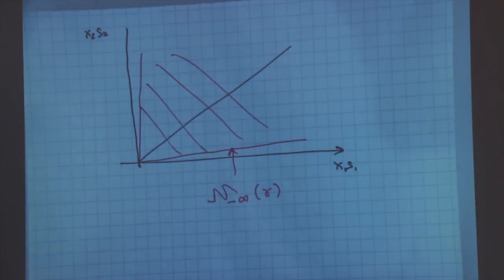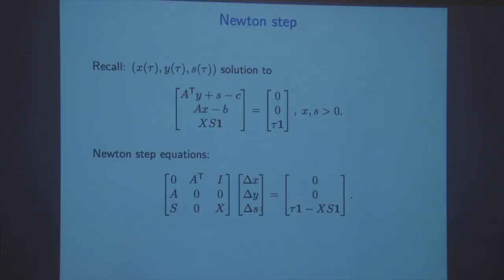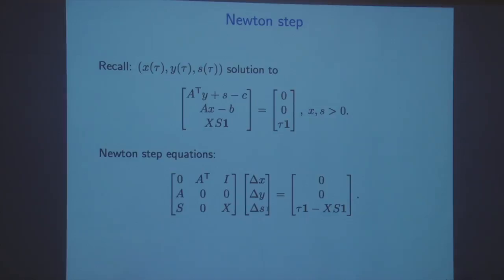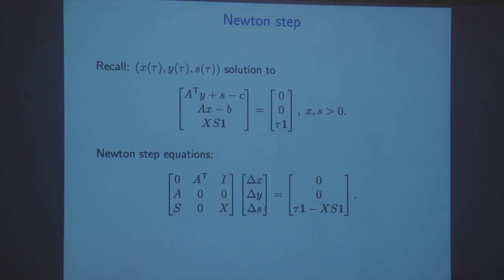There is one more key ingredient: the central path is the set of points defined by primal and dual feasibility and the perturbed complementarity condition x_j s_j equal to tau, with X and S positive. If we forget about the inequalities and only think about the equations, we can solve those equations with Newton's method. To apply Newton's method, we approximate the system with a linear approximation. The Newton step equations are a linearization of the equations we want to satisfy.